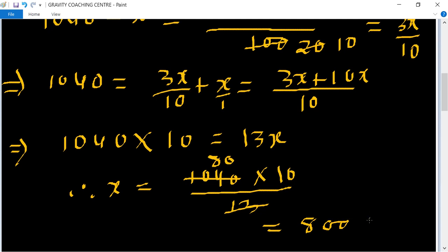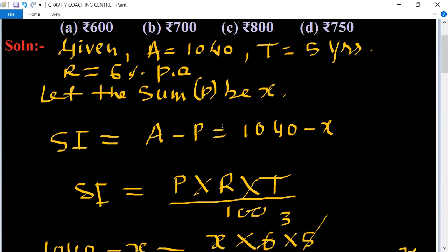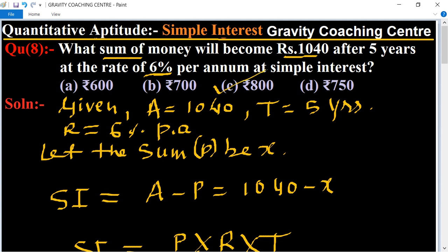Which is the required principle sum. So 800, so option C is the correct answer.